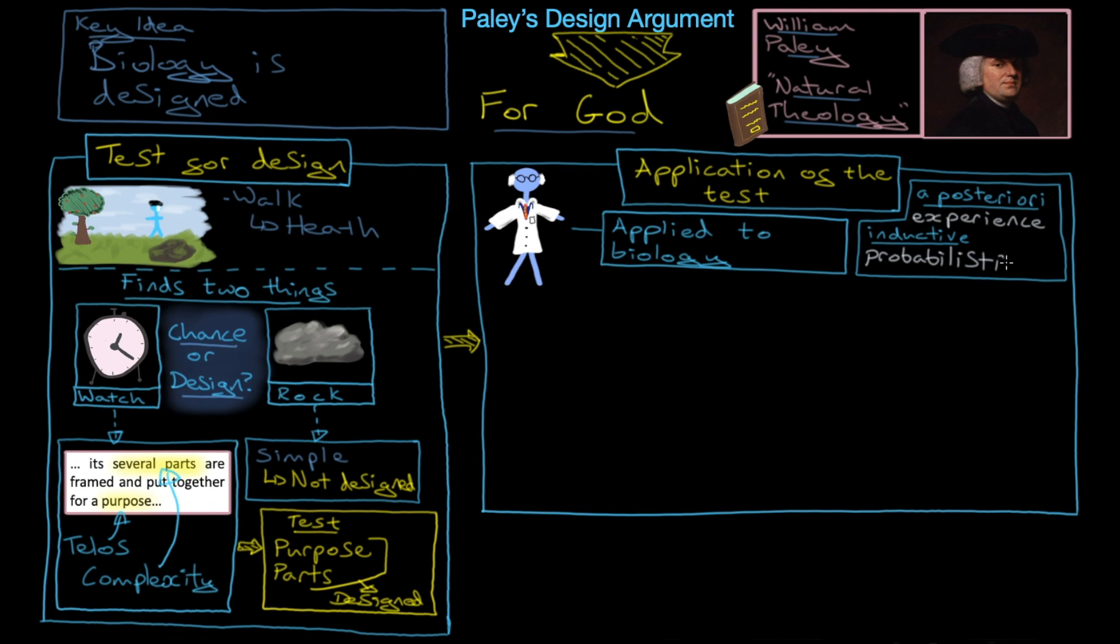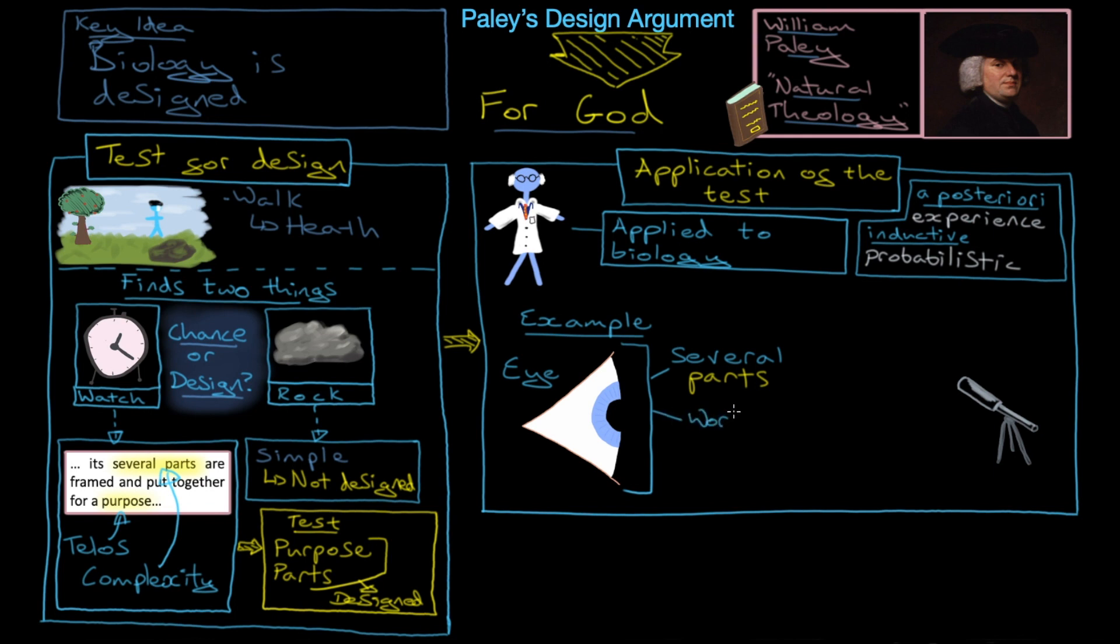Okay. So he looks at various kinds of biology. And that's what he spends a lot of the rest of the book doing. I'm going to give you one example, which is the first example he looks at, which is the example of the eye. And he says, the eye has various parts to it. Remember, the parts is part of the test for design.